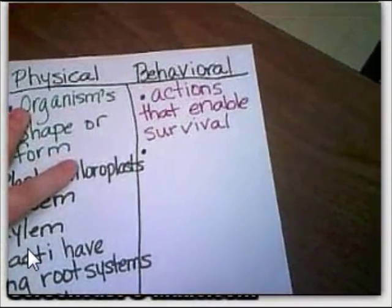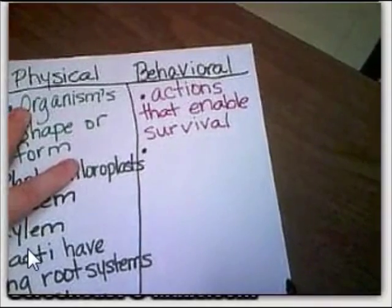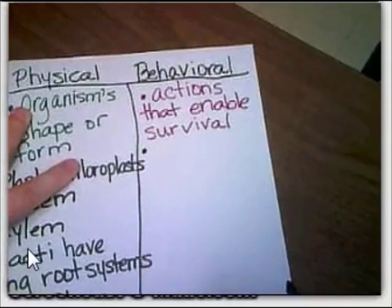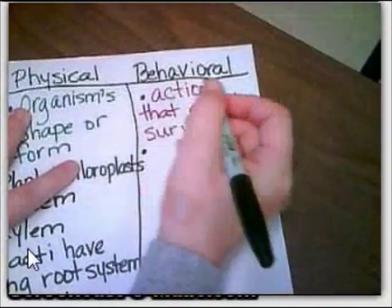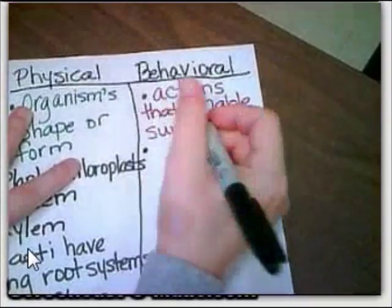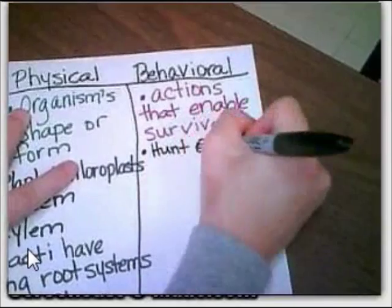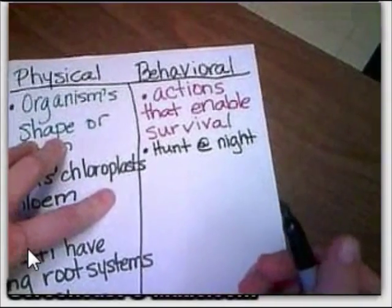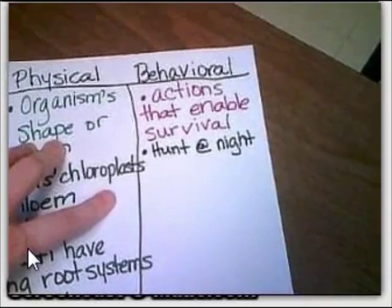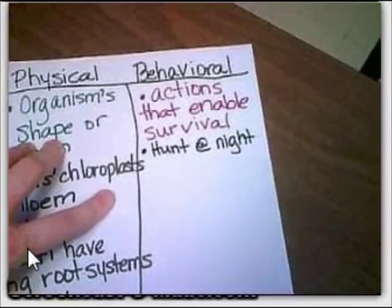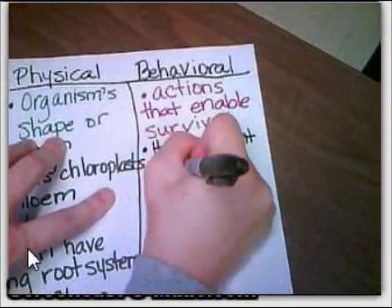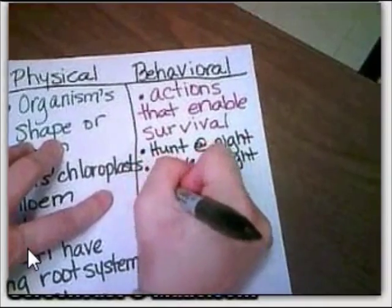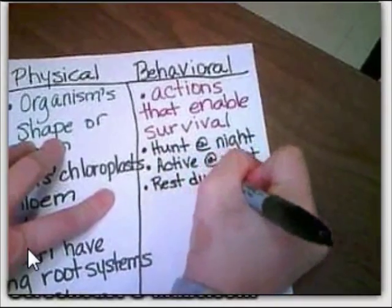You and I try to stay inside during the day as much as we can in a Texas summer. Animals do the same thing — they go out when it's cooler, early in the morning or overnight. Desert animals would hunt at night since there are no grocery stores for jackrabbits. Most of their activities happen at night and then they rest during the day.